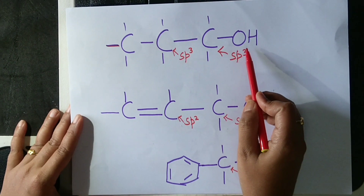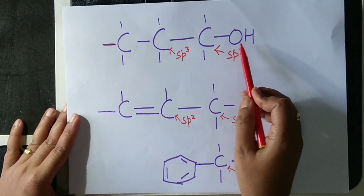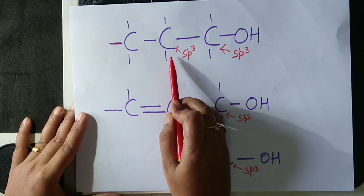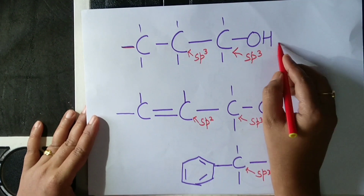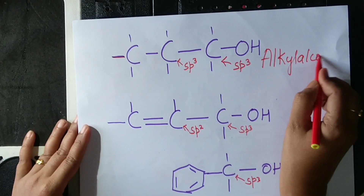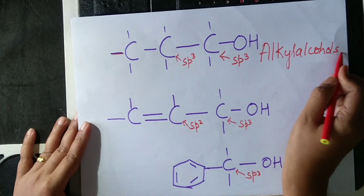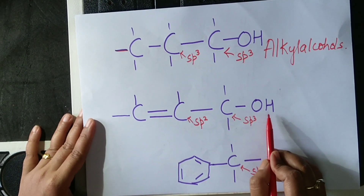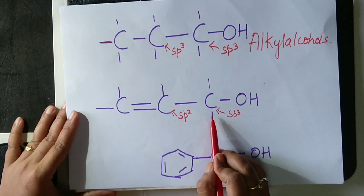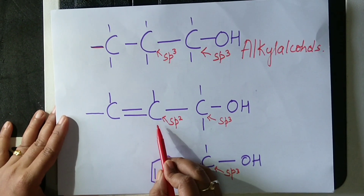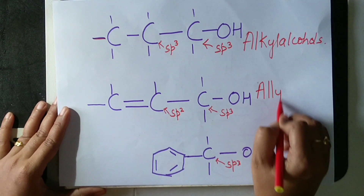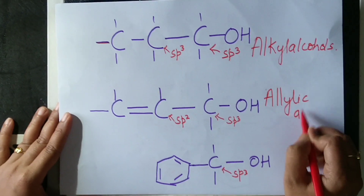The name of this molecule wherein OH is attached to an SP3 carbon atom next to an SP3 hybridized carbon atom — the alcohols in which OH is attached to an SP3 hybridized carbon atom which is next to an SP2 hybridized carbon atom are called allylic alcohols.